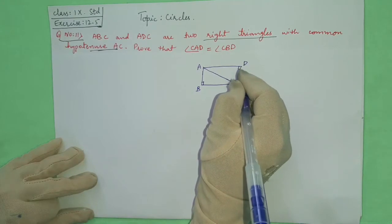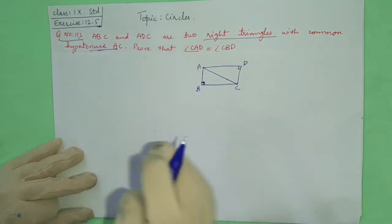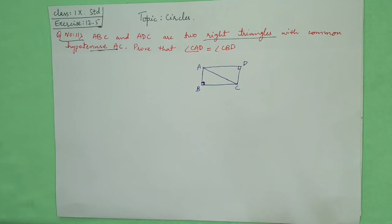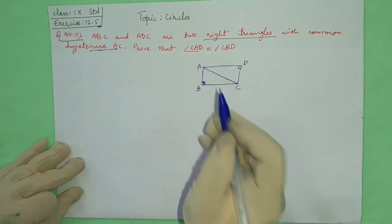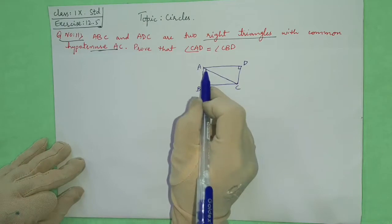So angle ADB is 90 and angle ABC is 90. This is given. And what we want to prove here, we will see. Angle CAD. So here you have an angle named CAD.